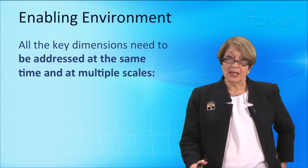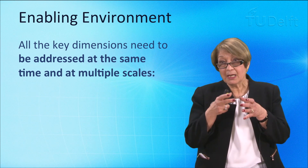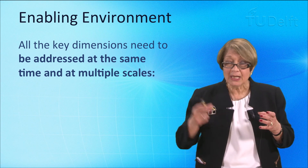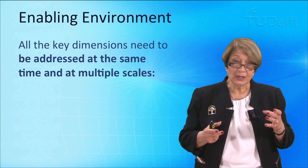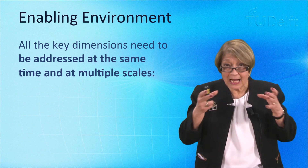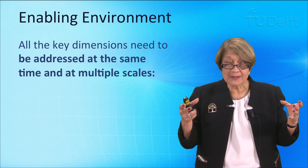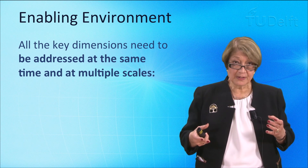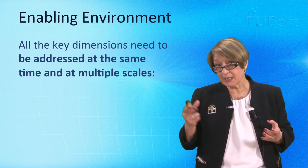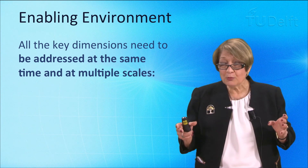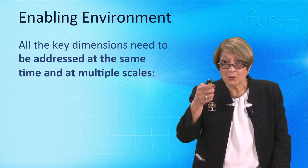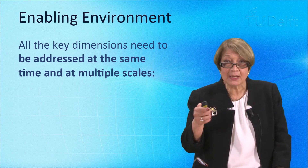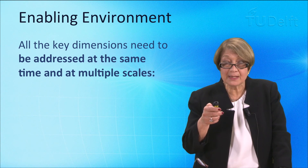All the dimensions in the cluster we have identified need to be addressed at the same time. We cannot say today we will address culture, tomorrow organisational structure, and the day after the financial dimension — because we are again isolating a single dimension and focusing on it at the cost of everything else. For example, in the UK our National Health Service keeps suffering from targets imposed by the government; these targets can always be met but at a huge cost in other areas. So we need to set up the enabling environment by addressing the key dimensions — not everything, but the clusters we have identified — all at the same time and at multiple scales.